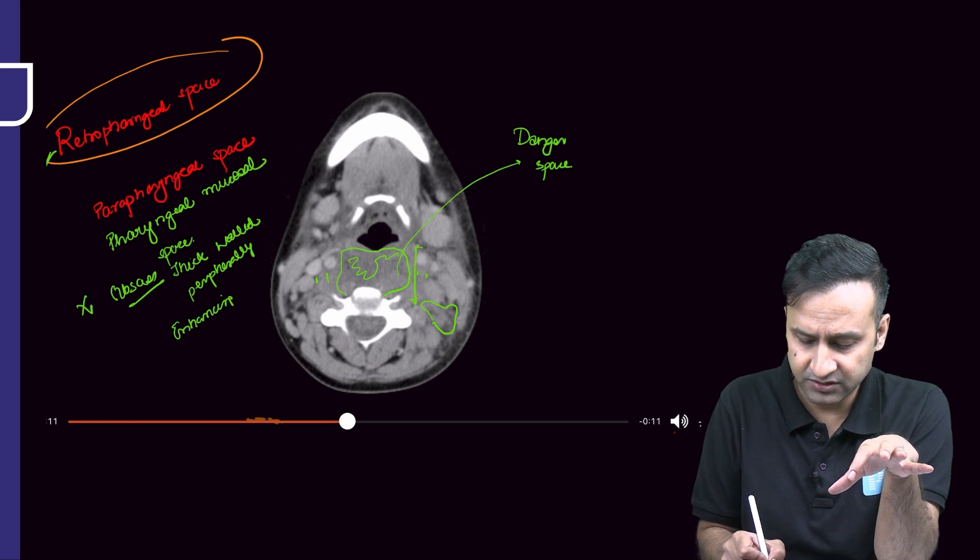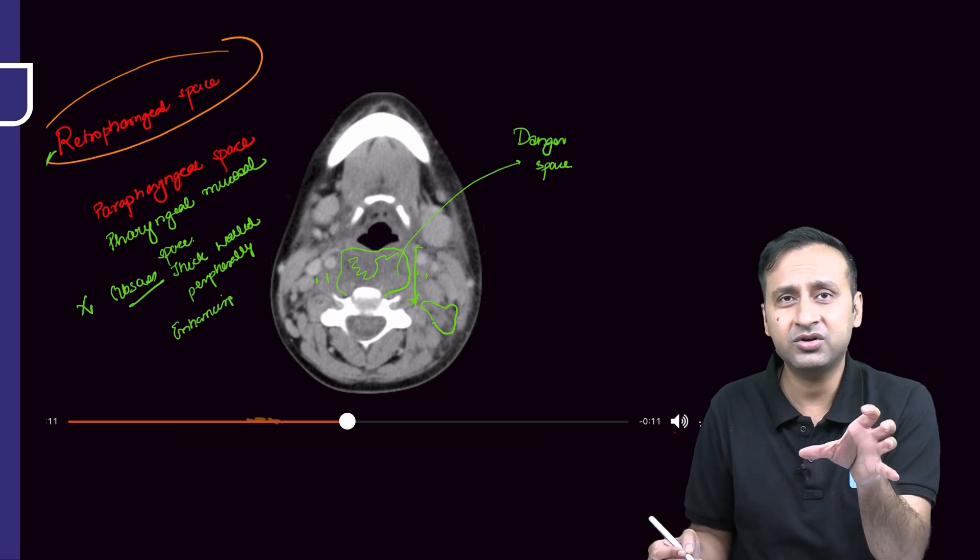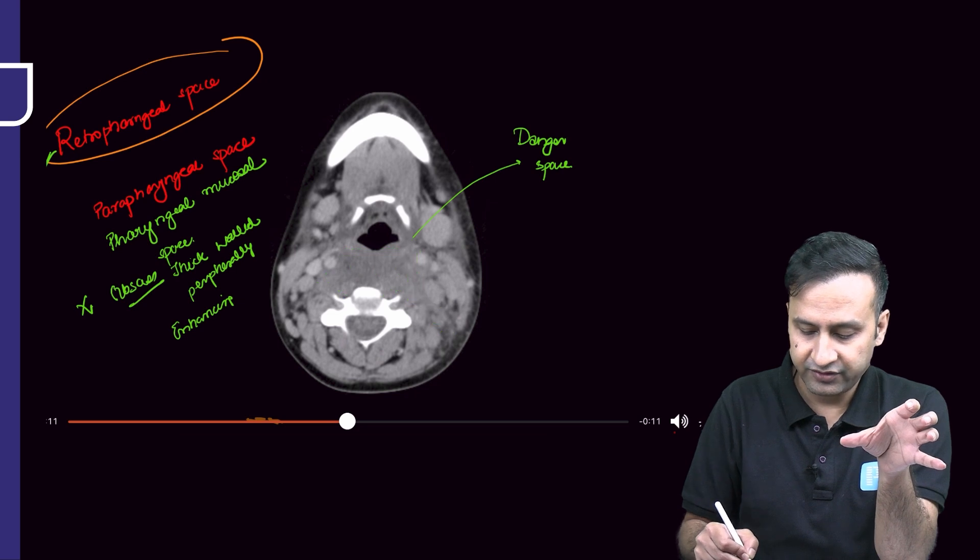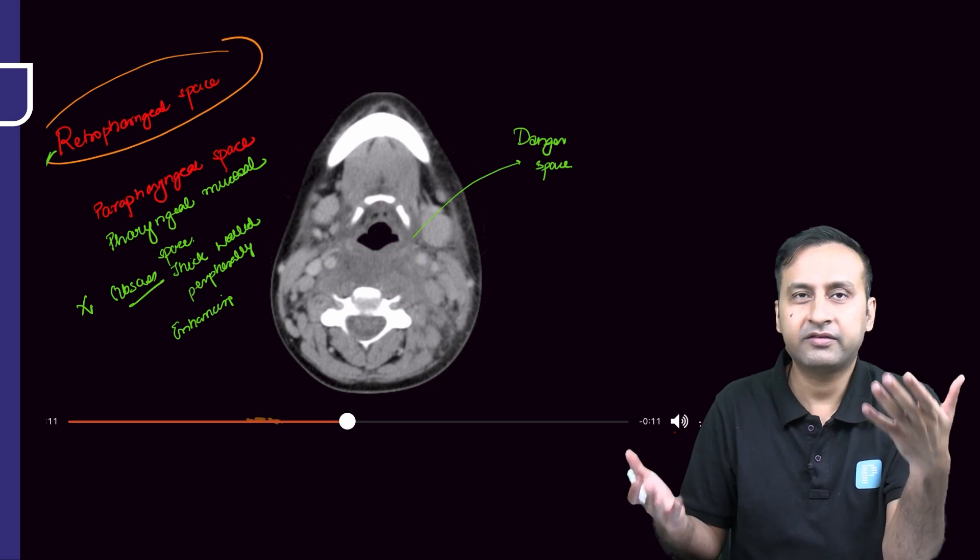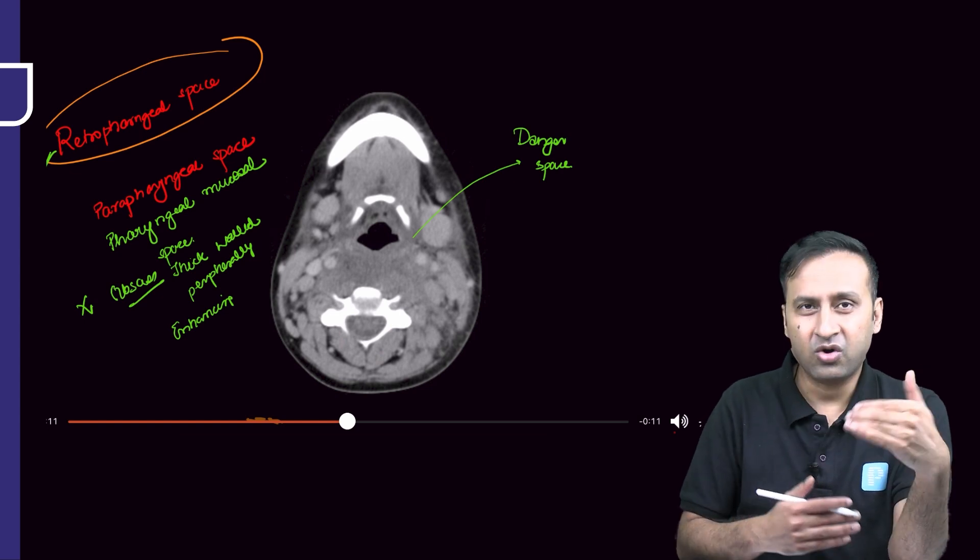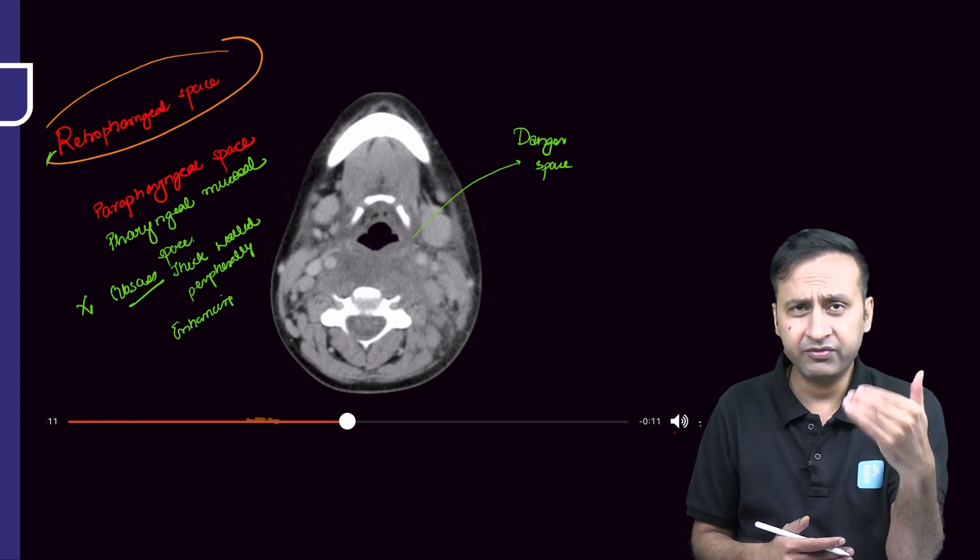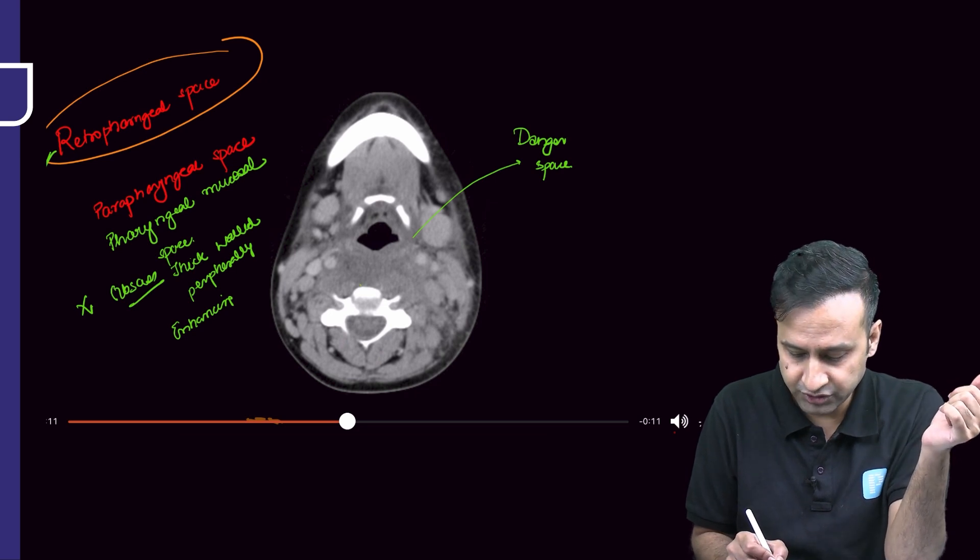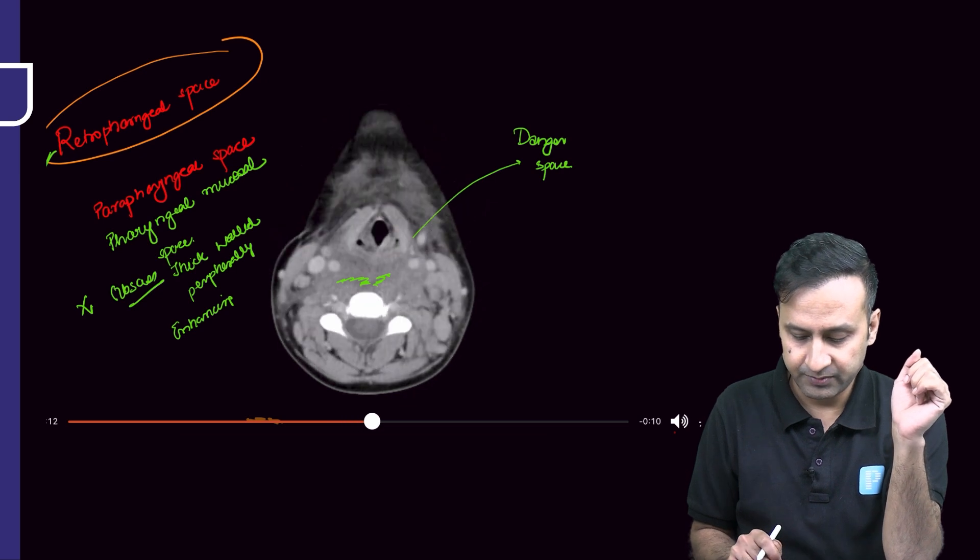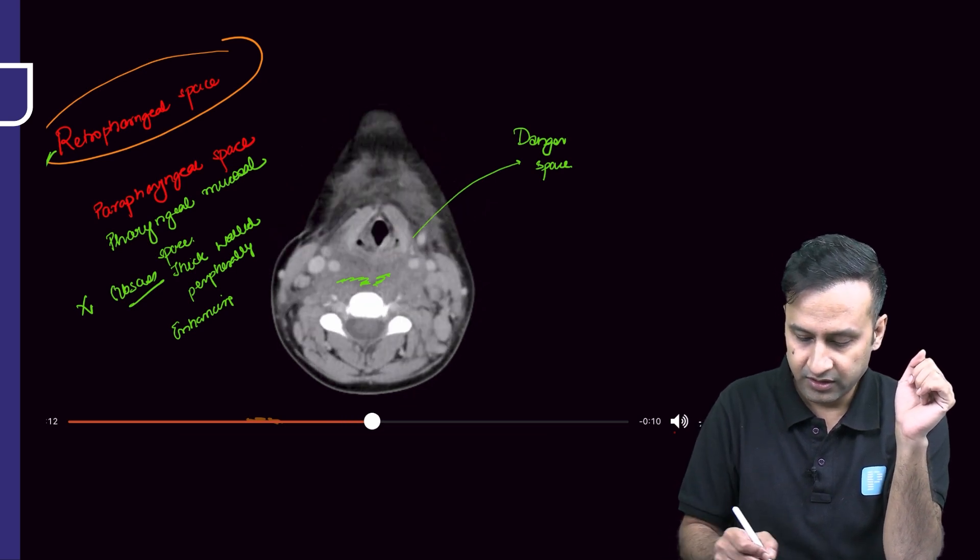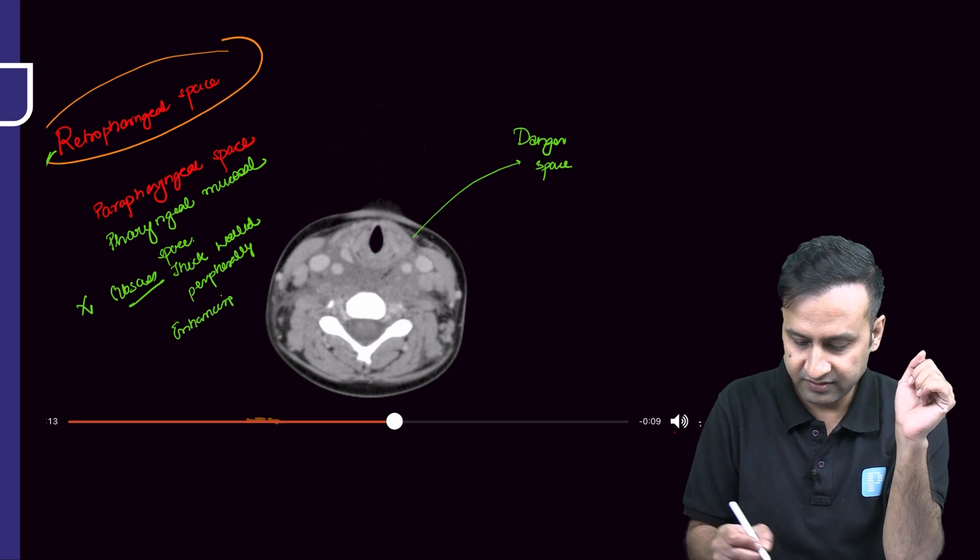I would say I've already talked about retropharyngeal space, but possibly involvement of danger space in this case I cannot rule out. Why? Because in retropharyngeal space collection, you won't have that much displacement, although it can occur. It is very difficult to differentiate between the two unless you see the alar fascia, which you obviously cannot see by naked eye - it is so thin. But when you see this type of gross displacement of the pharynx and larynx anteriorly, along with soft tissue reaching almost up to the vertebral body, there is a high likelihood of danger space involvement.